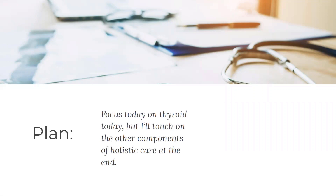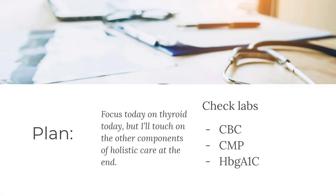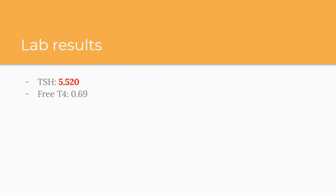So the plan: today I'm focusing on hypothyroid but I'll touch on other components of holistic care at the end. I'm checking her labs — a CBC because she has a history of anemia and fatigue, a CMP, a hemoglobin A1C, and a TSH. Some labs will reflexively order a free T4 and T3 if TSH comes back abnormal. Also checking lipids according to USPSTF screening guidelines. Her TSH came back at 5.520, free T4 of 0.69 which is normal, hemoglobin A1C of 5.7% putting her in the prediabetes range, and cholesterol is high. CBC and CMP are both normal.